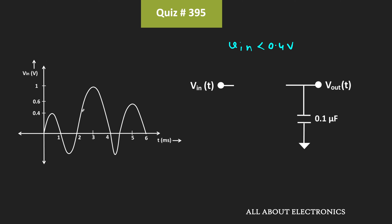Now once again after this point, when the input voltage crosses 0.4V, this diode will start conducting. And now the capacitor will charge up to this peak voltage. That means now at this point the voltage across the capacitor will be equal to 1V.